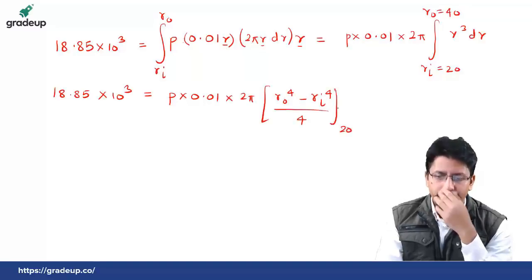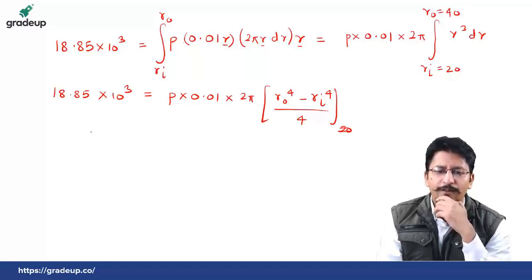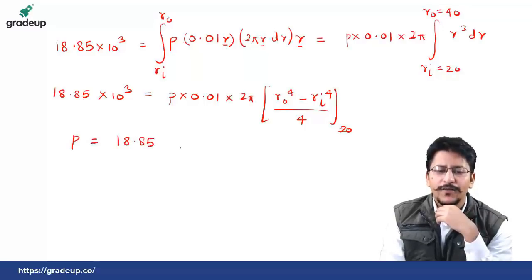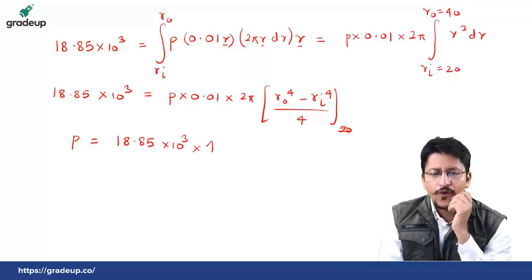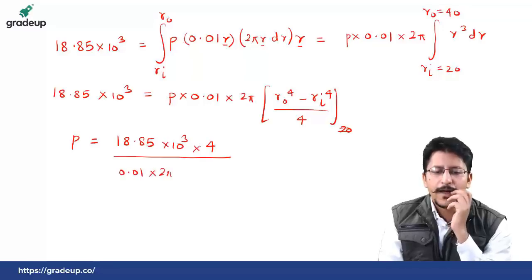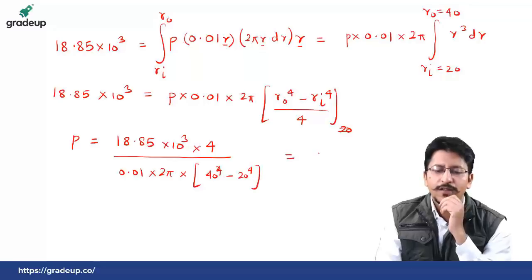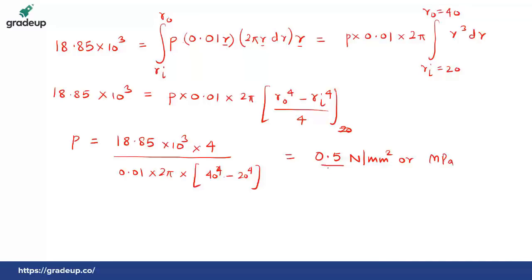Substituting the limits R0 = 40 and Ri = 20: 18.85 × 10³ × 4 = P × 0.01 × 2π × (40⁴ − 20⁴). Solving for P, we get P = 0.5 Newton per mm² or 0.5 MPa. The reason P was taken as constant outside the integral is because the question asked us to use the uniform pressure theory. The answer is 0.5 MPa.